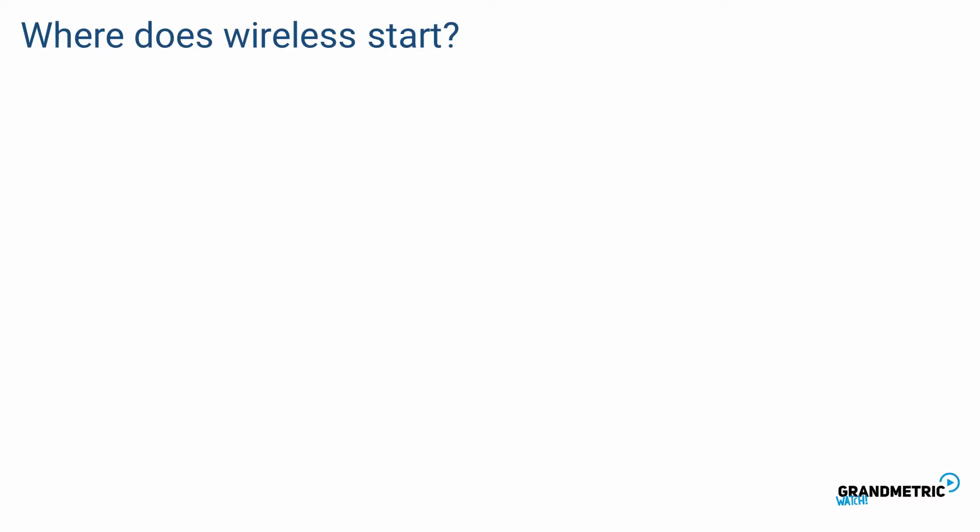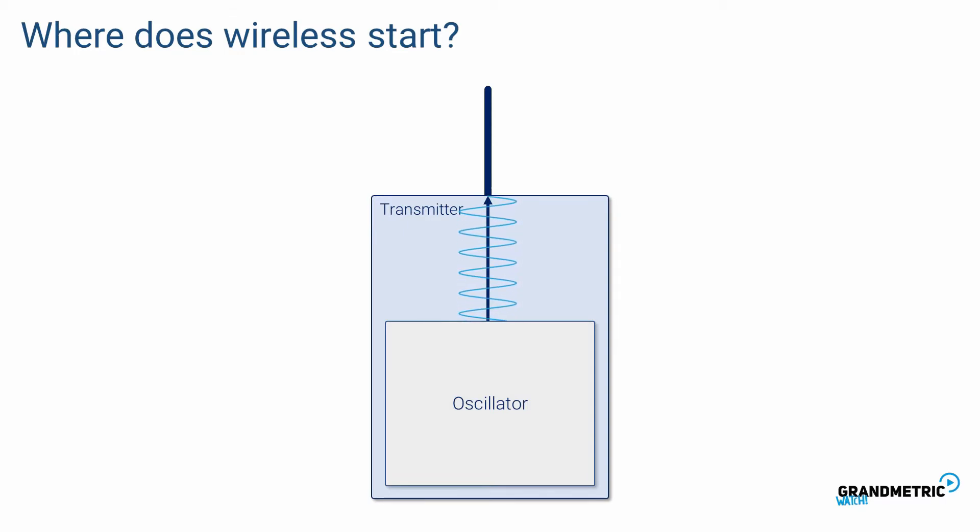Where does exactly wireless start? First we need a device called a transmitter which has an antenna. Inside the transmitter there is an oscillator that is connected to the antenna. The oscillator creates a signal that propagates through the wires to the antenna. The antenna is a conductor so signal propagates further towards the end of the antenna.